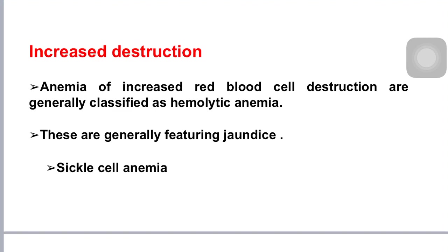Anemias of increased red blood cell destruction are generally classified as hemolytic anemia, generally featuring jaundice. Disease due to blood loss includes anemia from recurrent blood sampling for laboratory testing, trauma or surgery causing acute blood loss, and gastrointestinal tract lesions causing either acute bleed — for example peptic ulcer — or chronic blood loss.